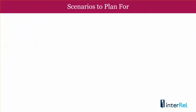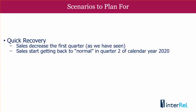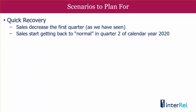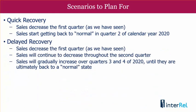The first scenario, and what I'm hoping for, is a quick recovery. In this scenario, sales are going to decrease throughout the first quarter as we have seen, then start getting back to normal next quarter. Another scenario would be delayed recovery, in which sales actually gradually continue decreasing throughout the second quarter, then start gradually increasing over quarters three and four, ultimately getting back to normal, but not until the end of 2020.